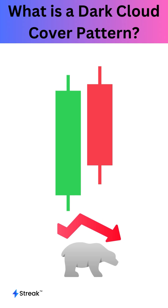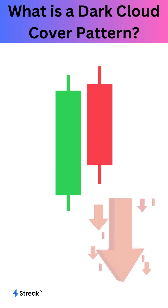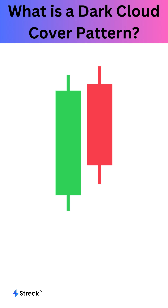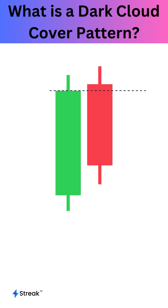The dark cloud cover pattern is a bearish candlestick pattern that indicates a potential reversal in an uptrend. It consists of two candles. The first candle is a bullish candle and the second one is a bearish candle that opens above the previous candle's close and closes below its midpoint.